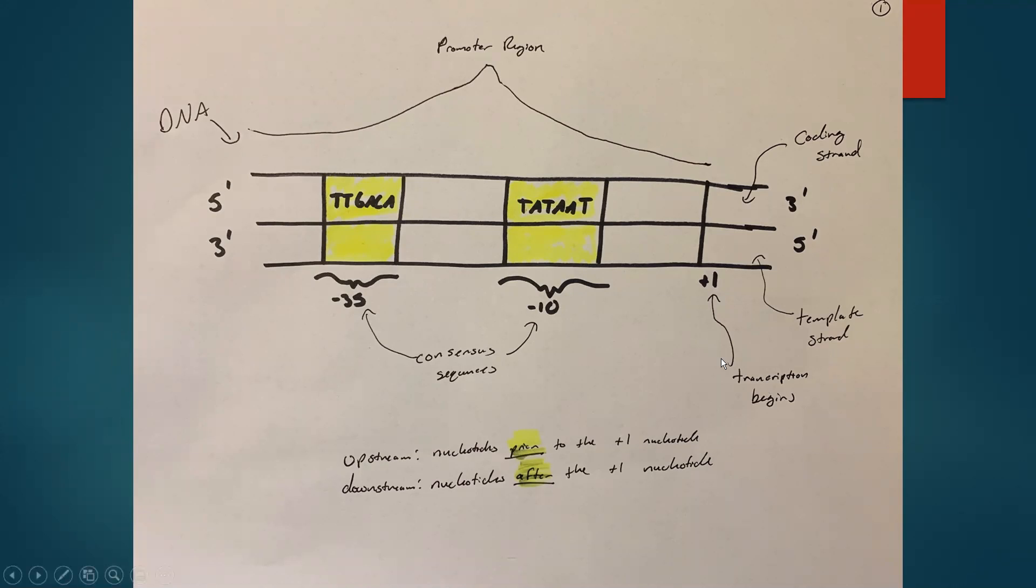This is the overall structure before initiation begins. Key features include the plus one nucleotide region where transcription begins. The negative 10 and negative 35 regions are both consensus sequences, meaning the average nucleotides across multiple organisms are relatively the same. The negative 10 region is known as the TATA box because the first four nucleotides are TATA. This whole region is known as the promoter region or promoter box.